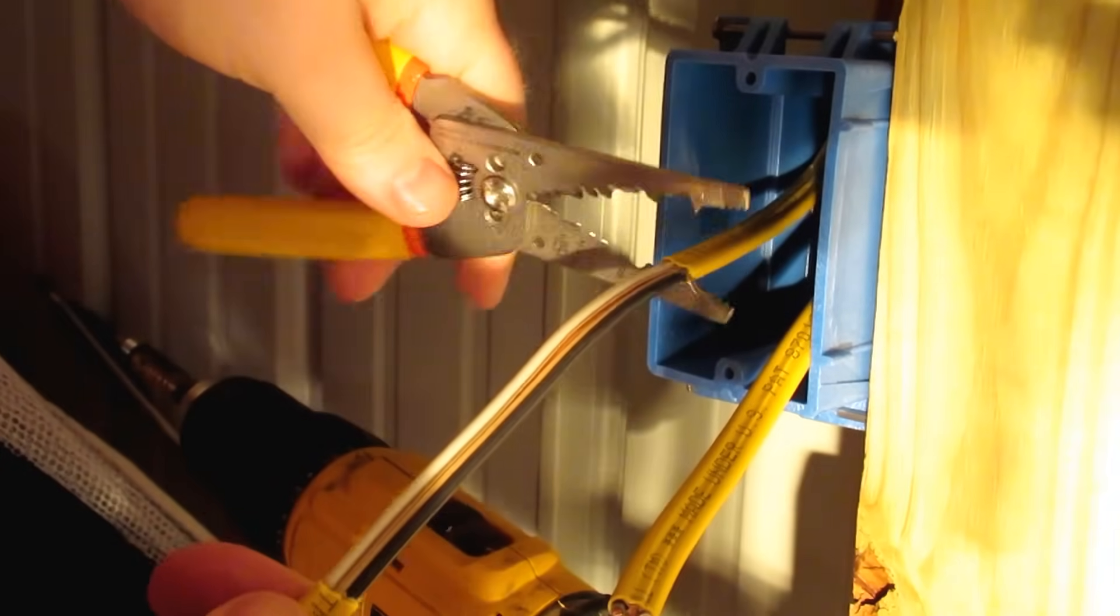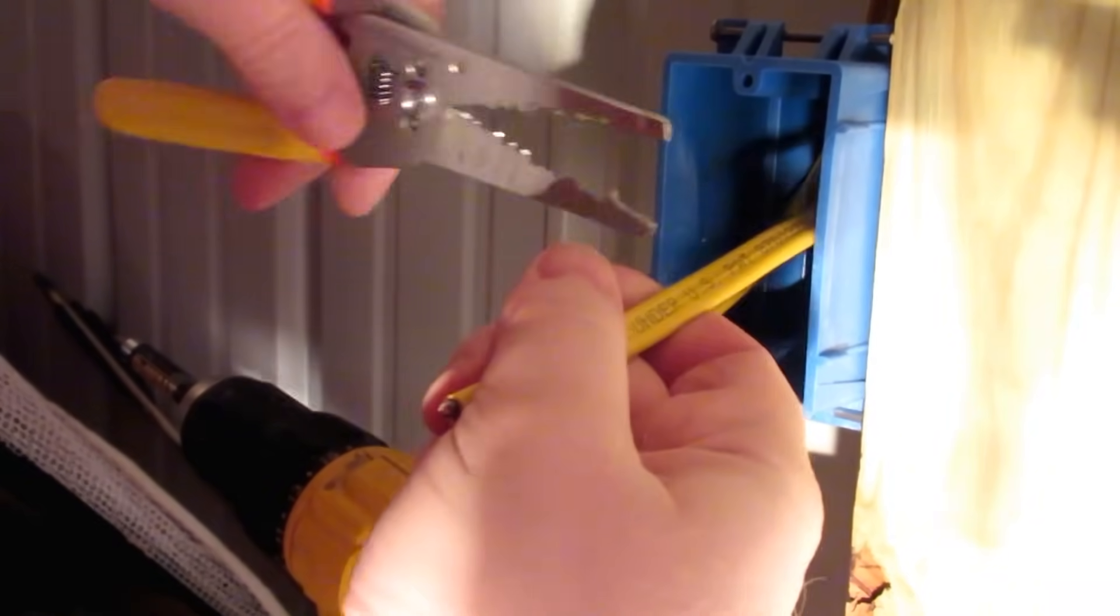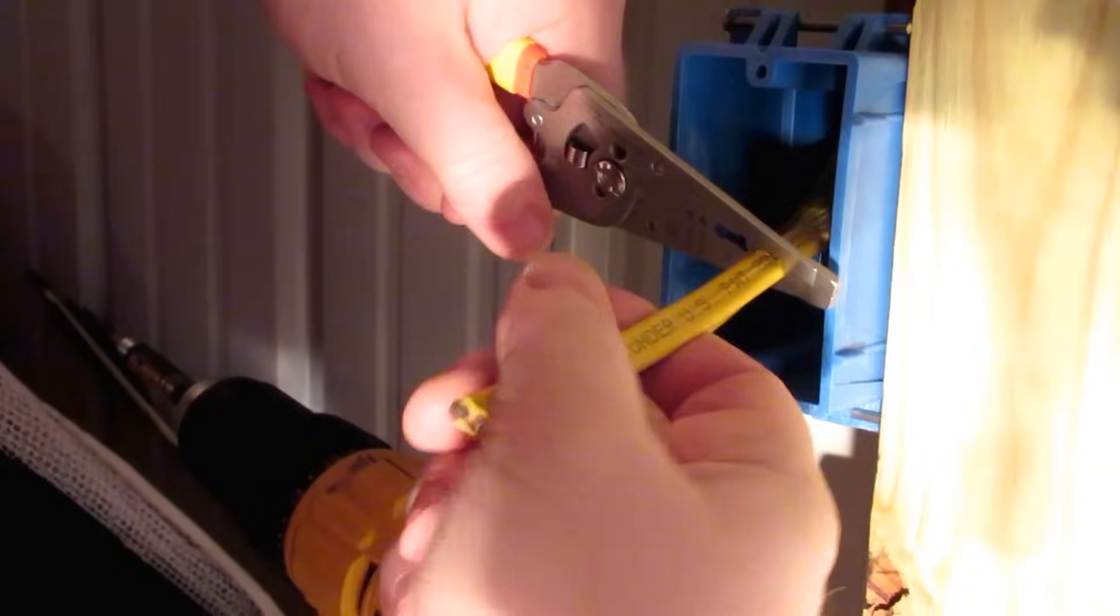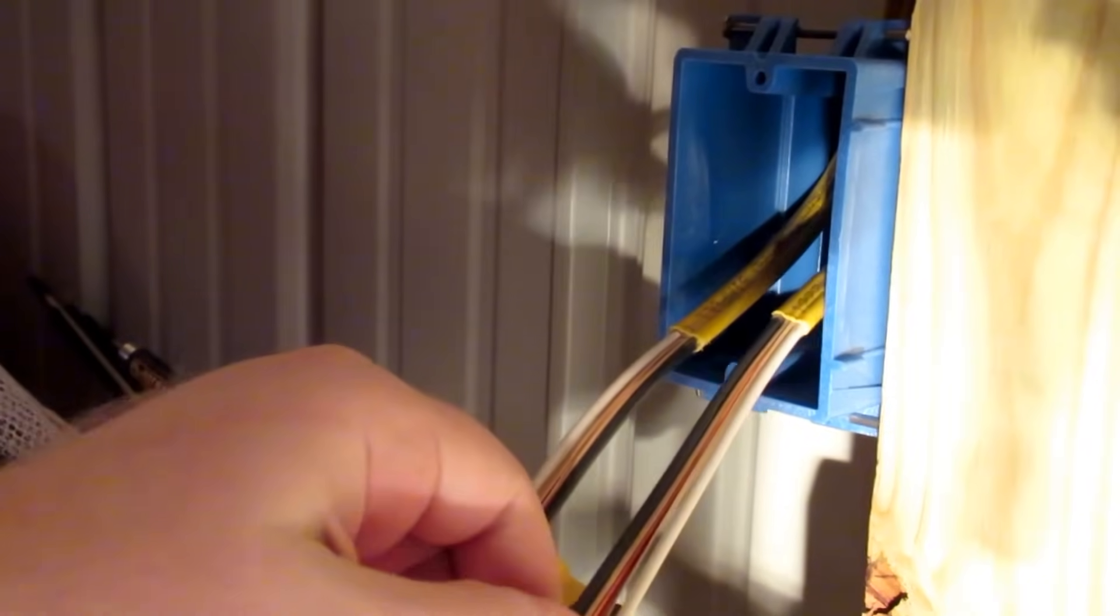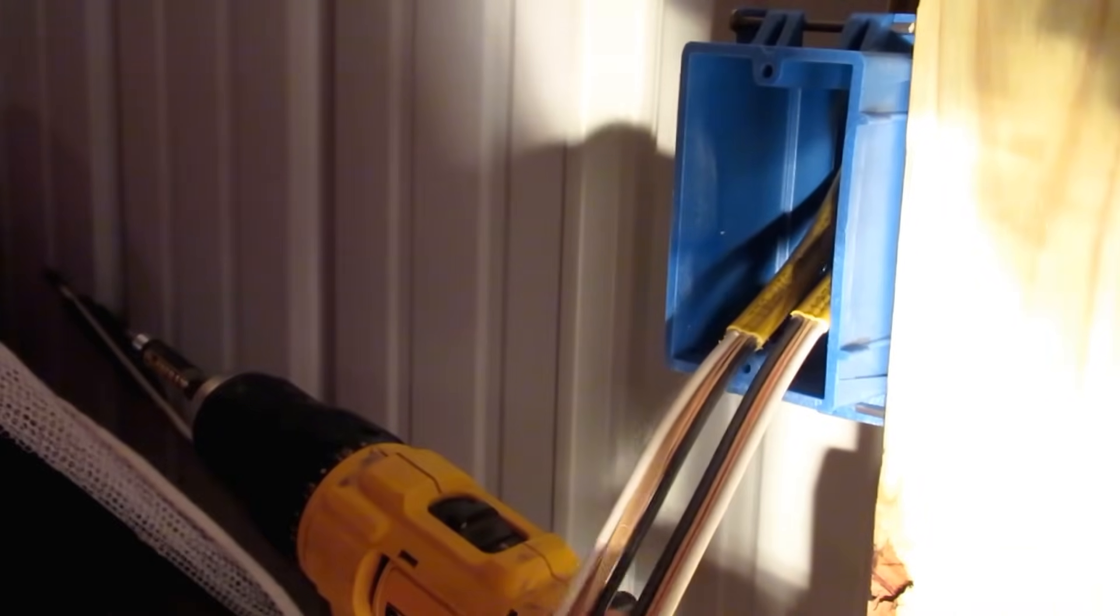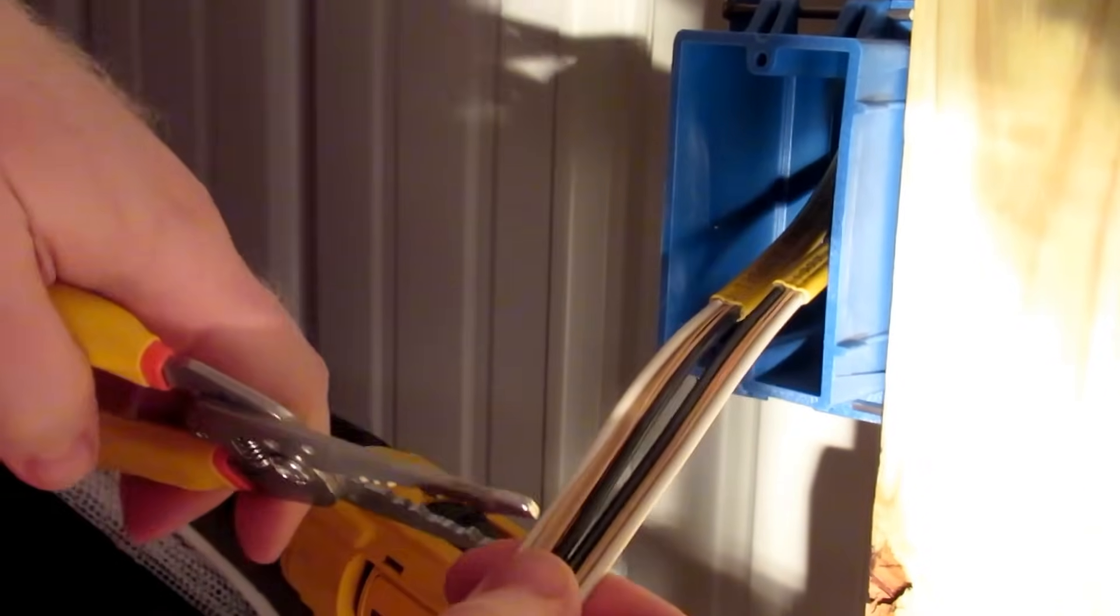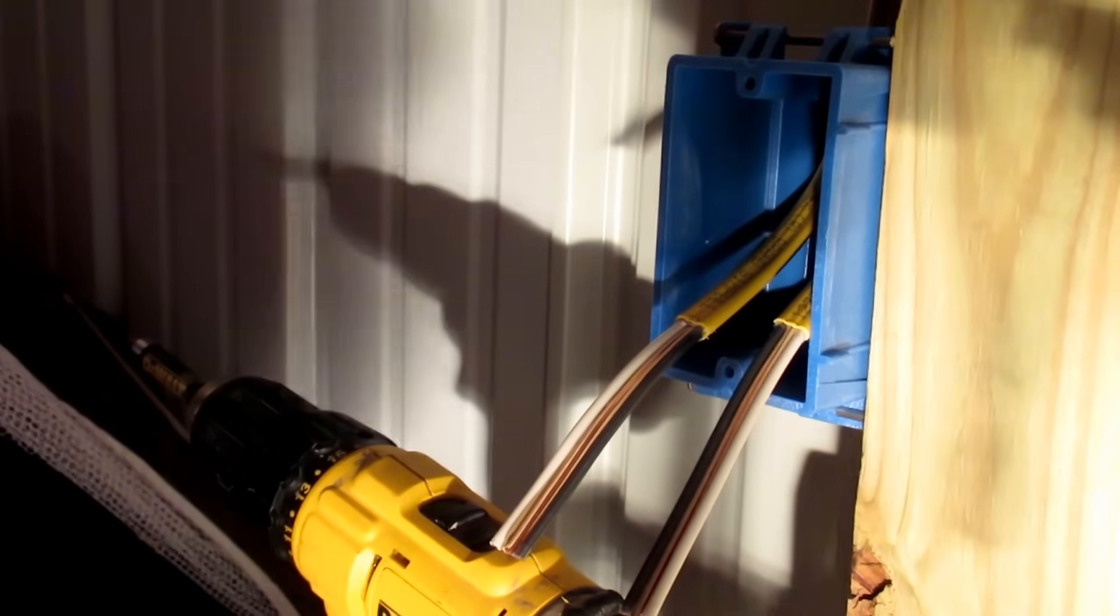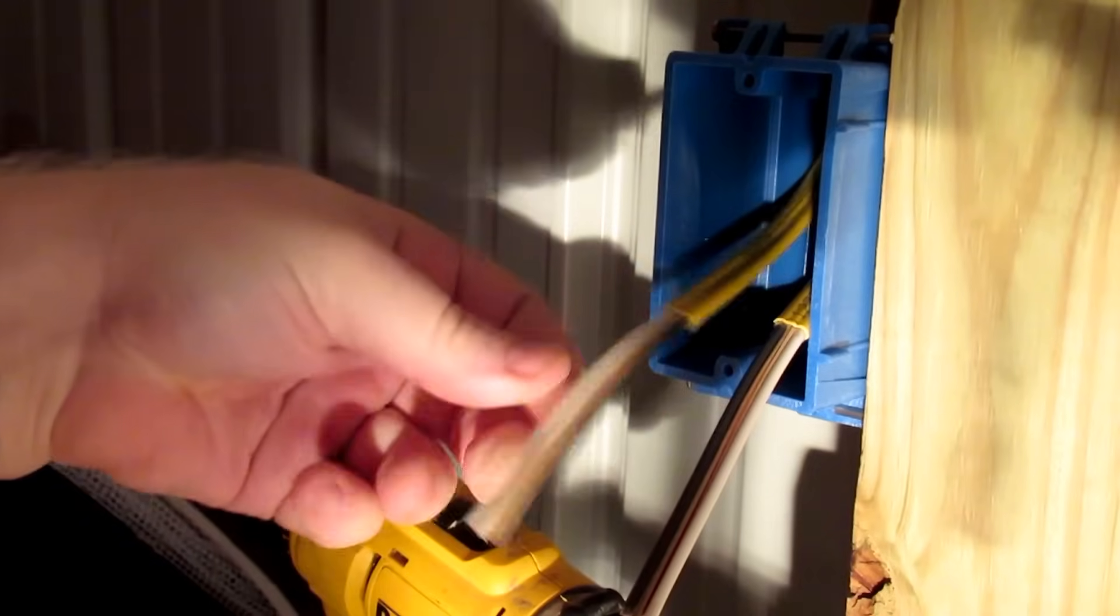See, once you score the wire you simply pull that insulation, that covering, completely off. Do that for both of your cables. Just like that. I like to trim these wires back slightly. There's a little too much sticking out of the box. This was the leftover from the roll that I had, so I didn't necessarily trim it up as far as I could have.